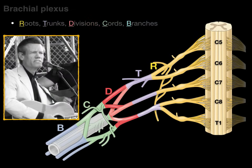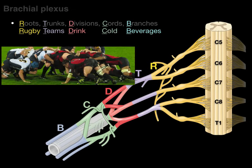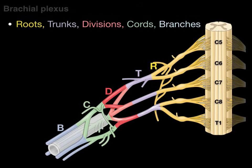The way I remember this is through 'Randy Travis Drinks Cold Beer.' And if you don't know who Randy Travis is, 'rugby teams drink cold beverages.' Either way, the important thing to remember is that roots, trunks, divisions, cords, and branches are the divisions of the brachial plexus from proximal to distal.